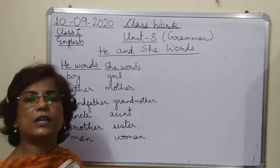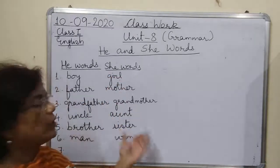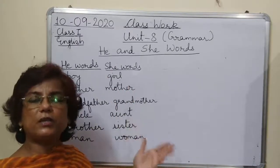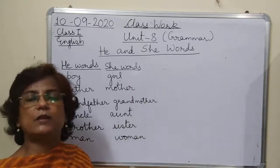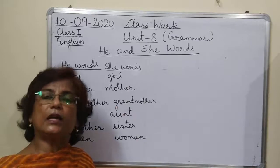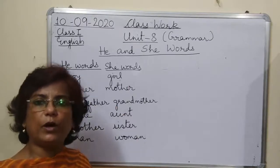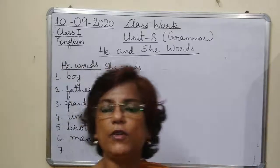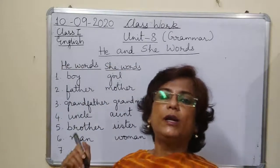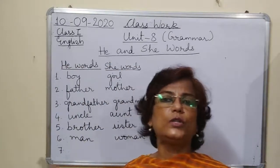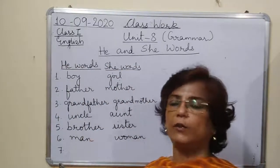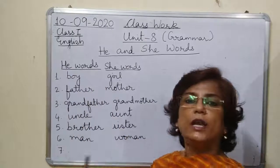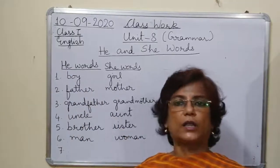These are very common examples. Person mein he and she. Animals mein bhi he words and she words hote hain. But we do not use he and she for animals. Yeh jo word hai — he and she — yeh hum animals ke liye nahi use karte hain. We use 'it' for them.